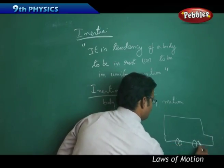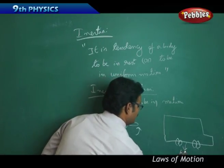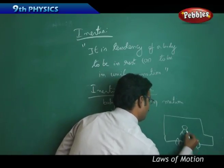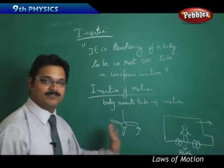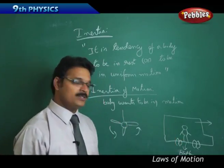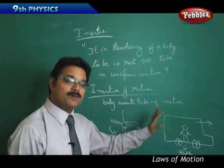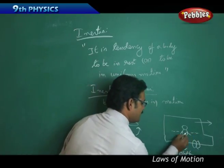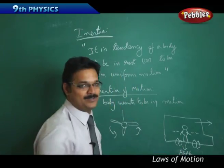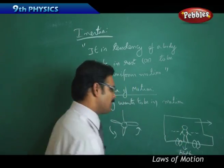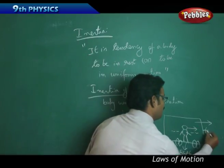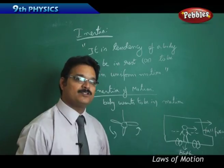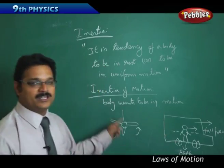Another example using the same bus scenario: the bus is now moving in the forward direction and the passenger is also moving with the same speed. Now the bus driver suddenly applies the brakes. The bus stops and the lower part of the person, in contact with the platform, also stops. But the upper part wants to remain in motion, so it moves forward and you fall forward. This is another example of inertia of motion.